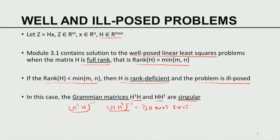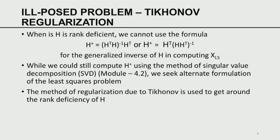When these inverses do not exist, I cannot follow the principles developed in the last lecture. This calls for newer methods. To reinforce further: when H is rank deficient, we cannot use the formula for the generalized inverse of H — neither the over-determined nor the under-determined formula. The generalized inverses used in computing the least squares solution cannot be computed, so I cannot use the old pathway.